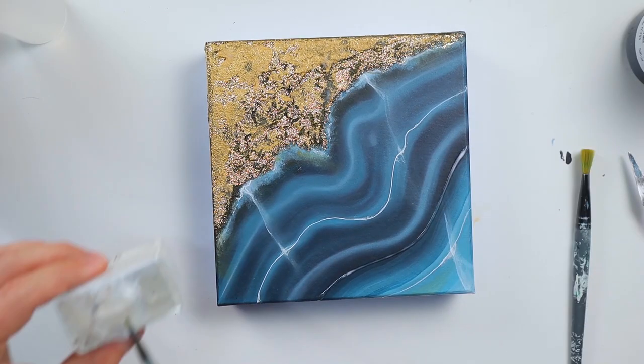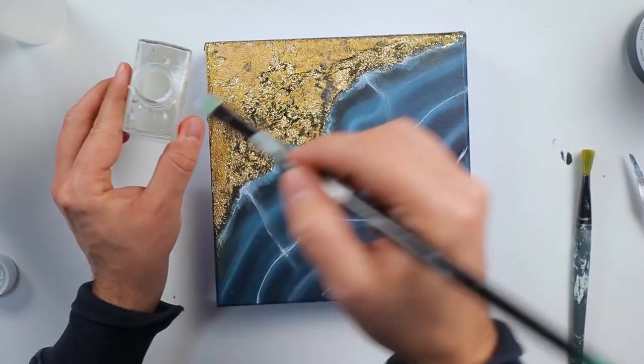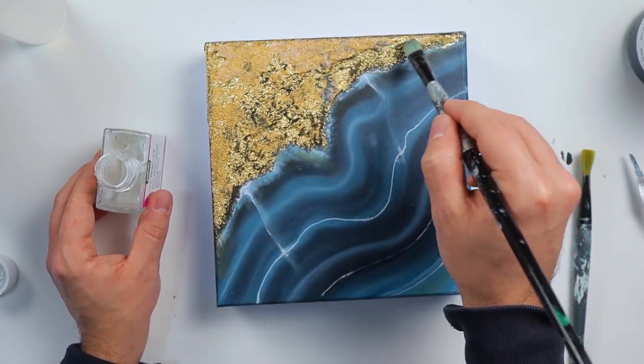I'm applying the gold leaf glue all the way through the part that I want it to cover with gold.